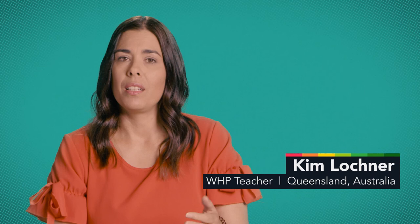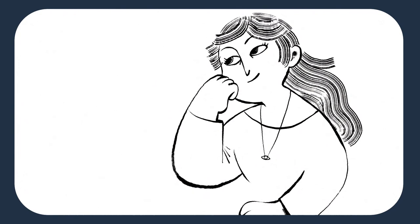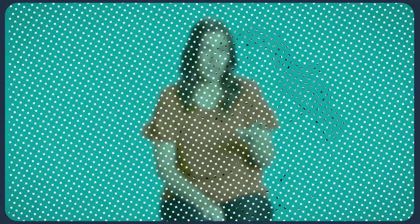When observed in her natural habitat, a historian will exhibit certain hallmarks of how she thinks about causation. First, when thinking about why some event happened, she's likely to argue that there's almost always more than one cause behind it. Cause and consequence have an interesting relationship, and the framing of what happened may change how you interpret the cause or causes.